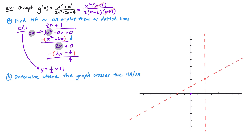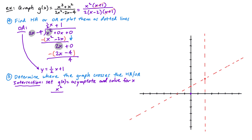Next we determine where our graph crosses the oblique asymptote. We set our function equal to the asymptote: x squared divided by 2x minus 4 equals 1 half x plus 1. To eliminate the fraction, we multiply both sides by 2x minus 4. The left side simplifies to x squared, and on the right we expand using FOIL: 1 half x times 2x gives x squared, the outer terms give minus 2x, the inner terms give plus 2x, and the last terms give negative 4.